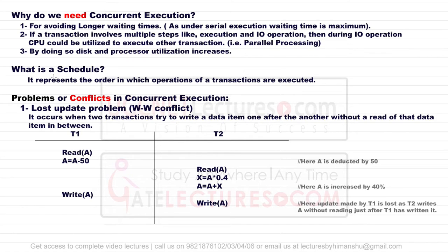There are some problems related to concurrent execution. We may lose some data items while performing transactions in parallel. The first problem is called the lost update problem, which is due to a write-write conflict. It occurs when two transactions try to write a data item one after another without a read of that data item in between.